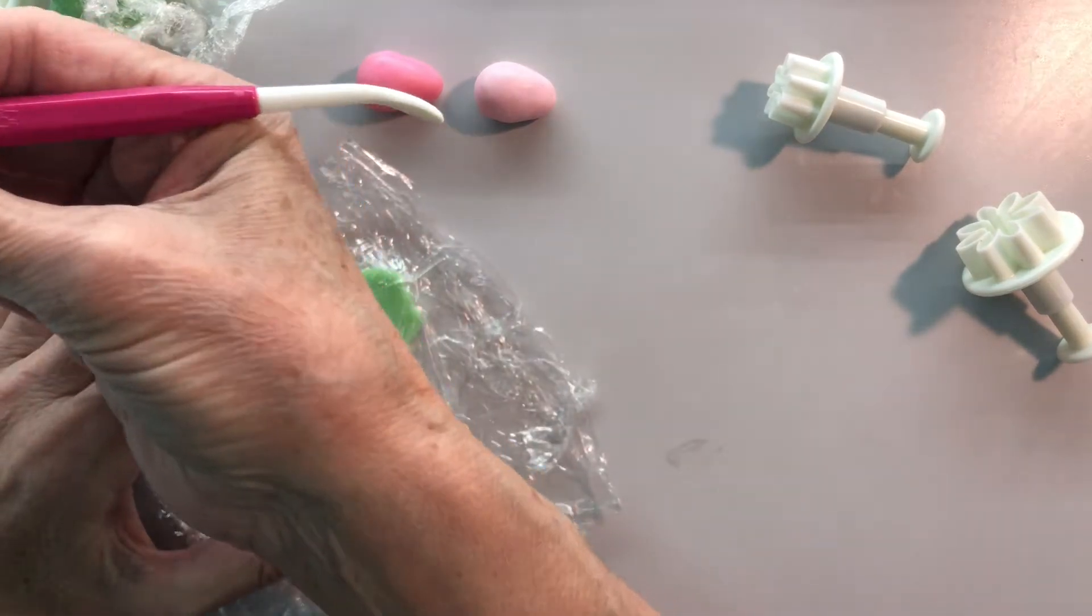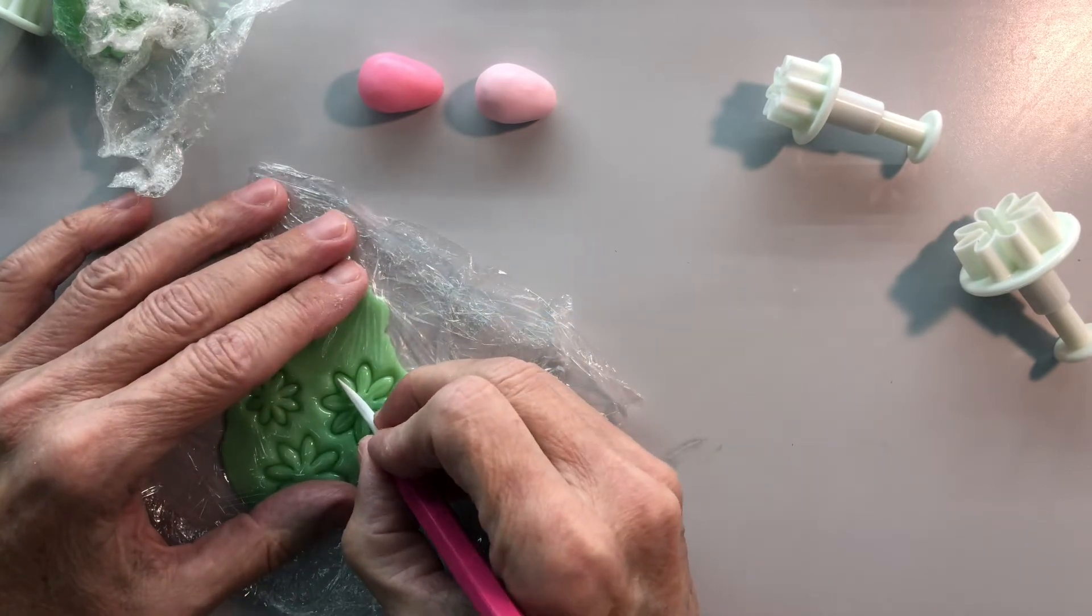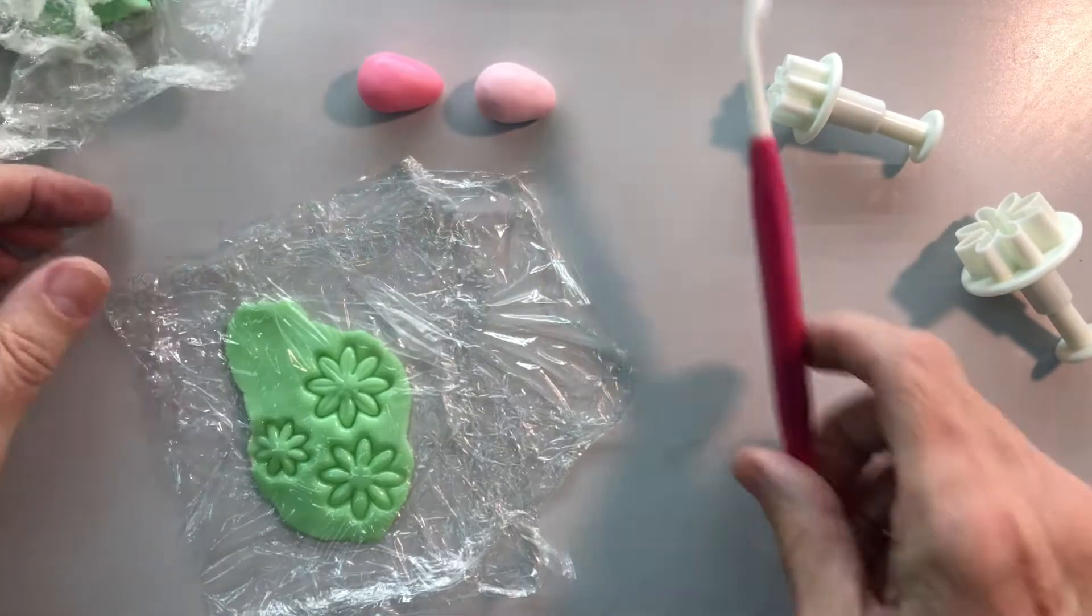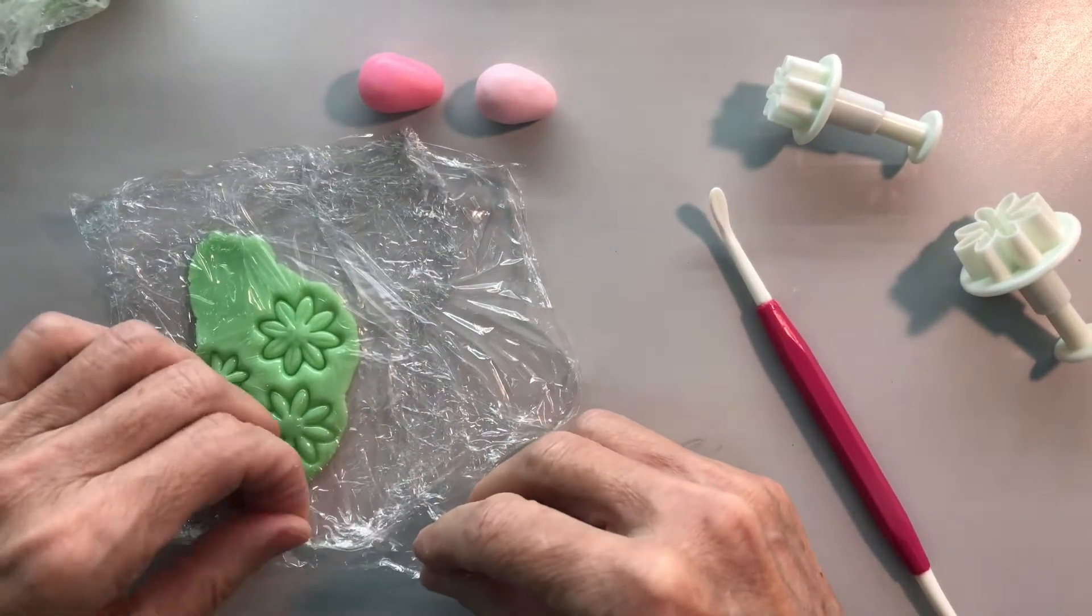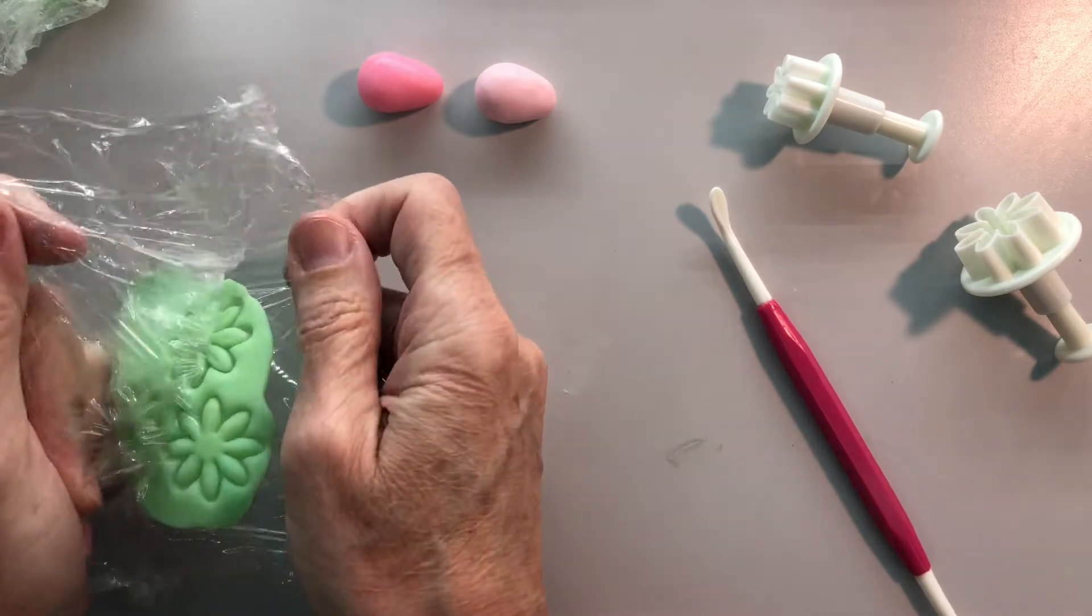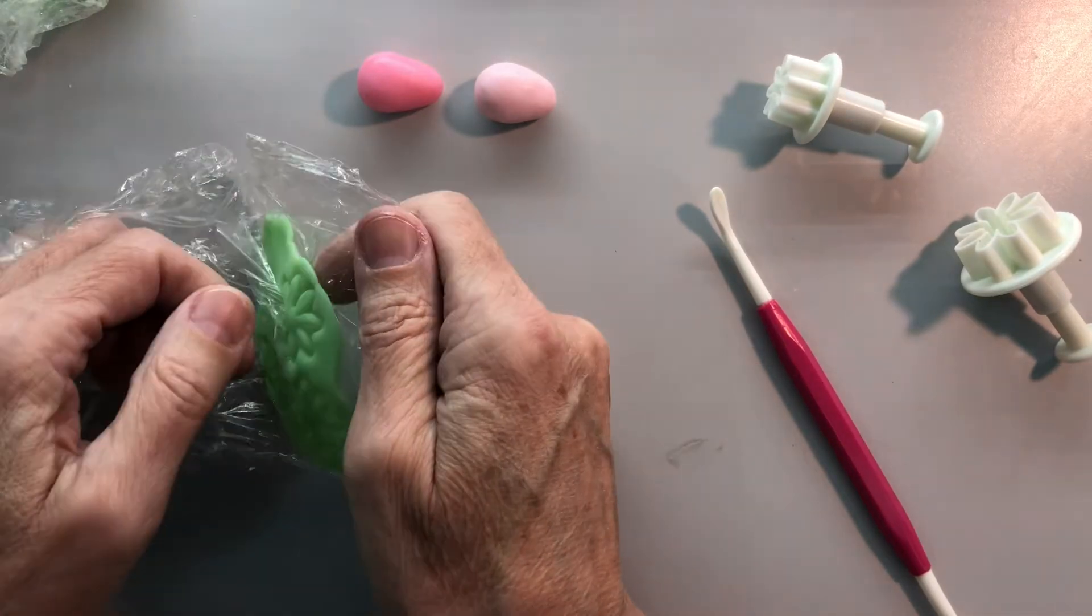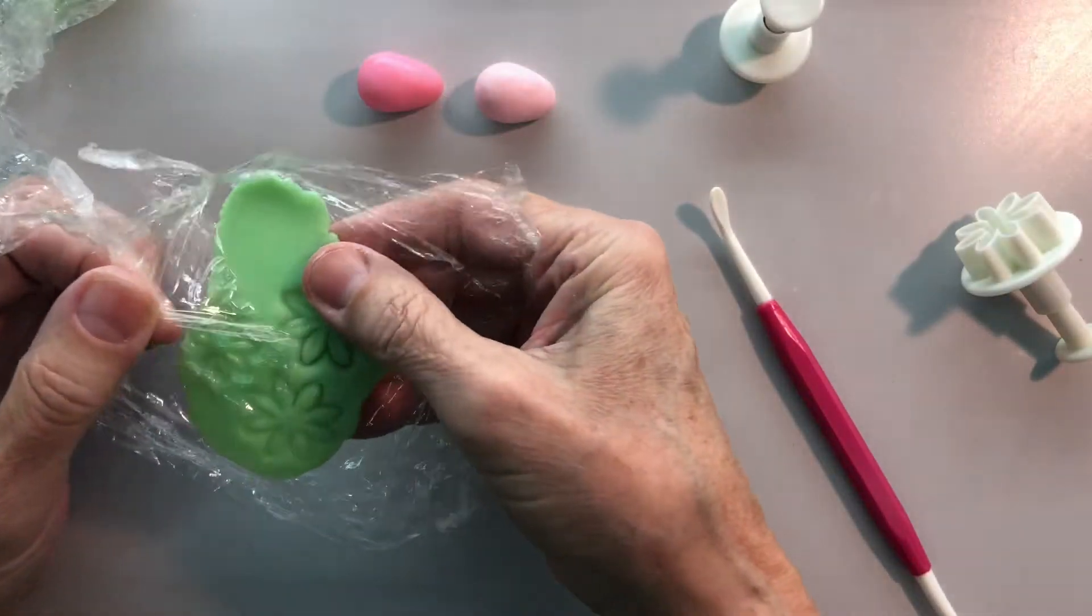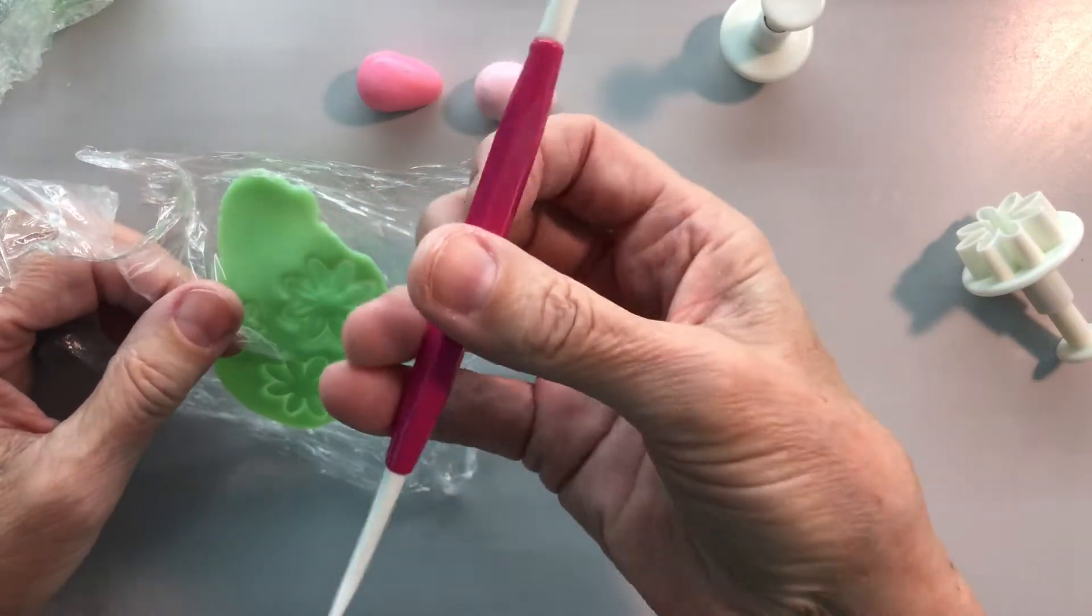And this is just a little Dresden tool. So if you're looking up just this tool, that's what it's called. But they come in... if you order a bunch of fondant tools... these are called fondant plungers. If you order a bunch of those, you can get a set and this will come in it too.